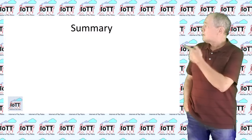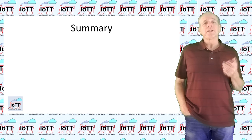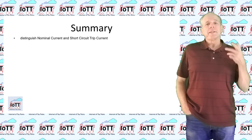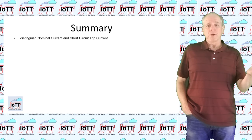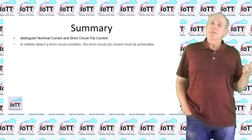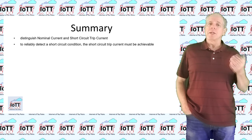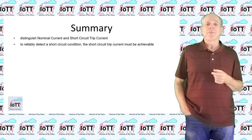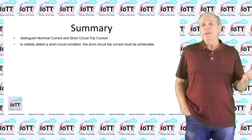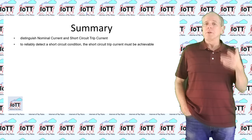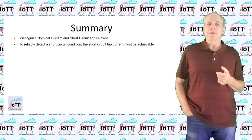To summarize, here are the key points of the short circuit and overload protection concept. There is a distinction between nominal current and short circuit trip current. The short circuit trip current must be achievable in order to reliably detect a short circuit. The power supply needs to be able to supply it, and the layout wiring must be capable of supporting the intended current levels.